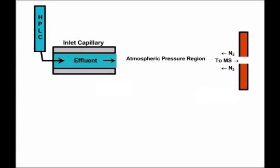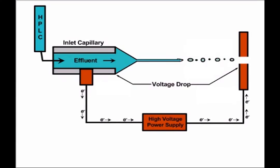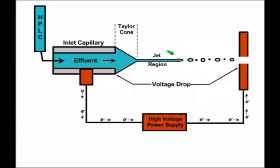What actually makes this an electrospray interface, however, is the presence of a high voltage power supply which has been applied from the inlet capillary to the inlet to the mass spectrometer across this atmospheric pressure region. When we apply high voltage to a capillary which is carrying a liquid flow, we get this characteristic formation of what's known as a Taylor cone. The Taylor cone is pulled into a jet, and that jet is further disrupted into a series of droplets. This is again very characteristic of applying a high voltage to this inlet capillary.